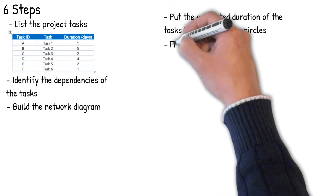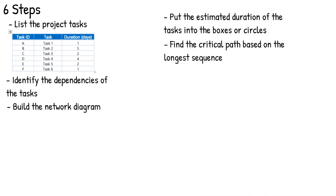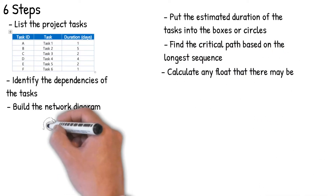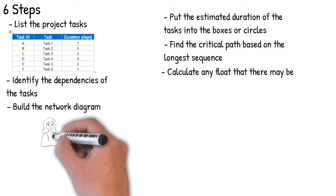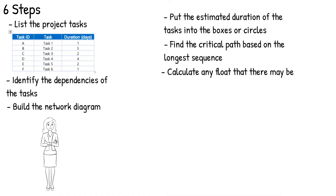Put the estimated duration of the tasks into the task boxes or circles. Find the critical path based on the longest sequence. Each sequence is simply the list of tasks that are dependent on each other. For each sequence, write down the start and end time. The first activity has a start time of 0, and the end time would be the duration of that activity. The next dependent activity's start time is the end time of the previous activity, and the end time is the start time plus the duration.